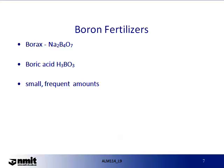Soil pH and liming: boron availability decreases with increasing pH, with a notable drop in plant uptake above pH 6.3–6.5. Crops such as alfalfa, which have a high boron demand, also require soil pH above 6.5 for optimal growth. Liming acid soils sometimes induces a temporary boron deficiency. Soil fertility also matters: balancing the various soil nutrients influences boron's plant use efficiency, with particularly strong interrelationships between boron, nitrogen, potassium and calcium — all of which must be considered when fertilising.